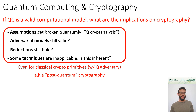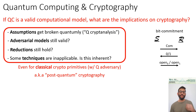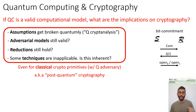Let me illustrate these aspects with an example. The basic cryptographic primitive known as bit commitment: a sender decides on a bit — 0 or 1 — and generates a commitment string, which is sent to the receiver. Once recorded, the sender is not supposed to be able to change their mind.